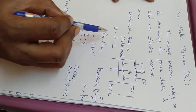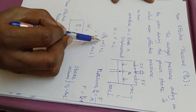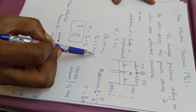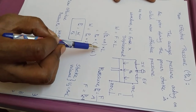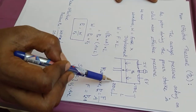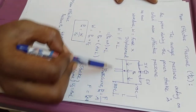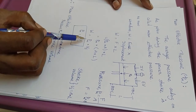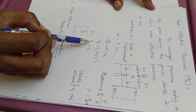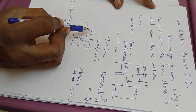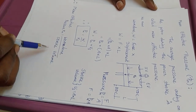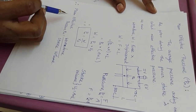Substituting the gas force, we get work done W equal to mean effective pressure times area of cross section times stroke length. The product of area of cross section and stroke length is nothing but the stroke volume or swept volume. So finally, W equals mean effective pressure times stroke volume. Therefore, mean effective pressure is the ratio between work done and stroke volume.